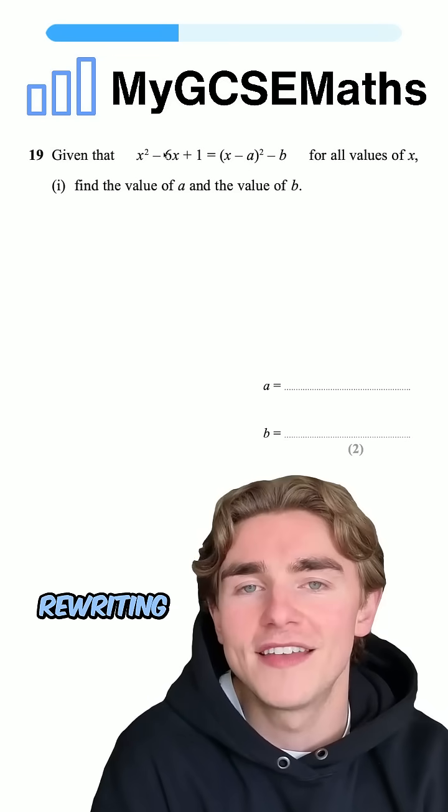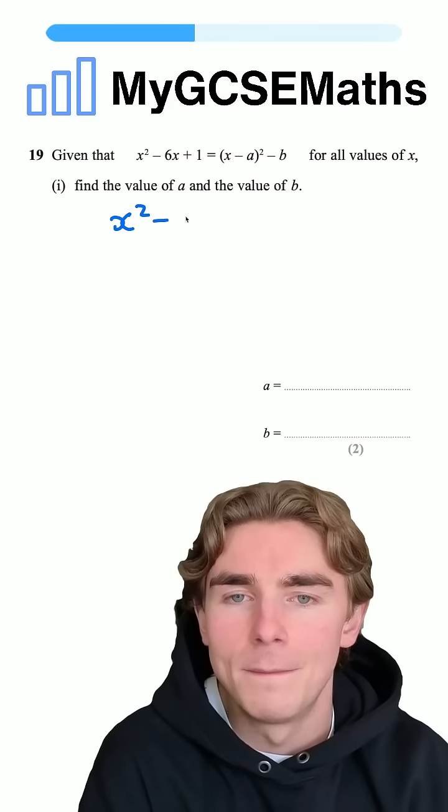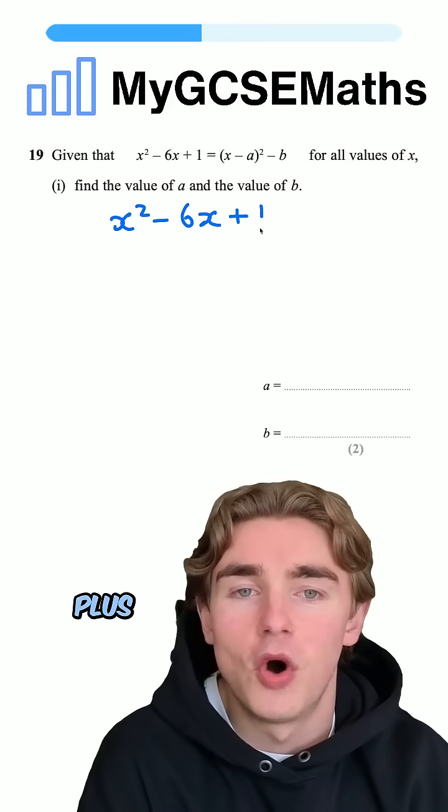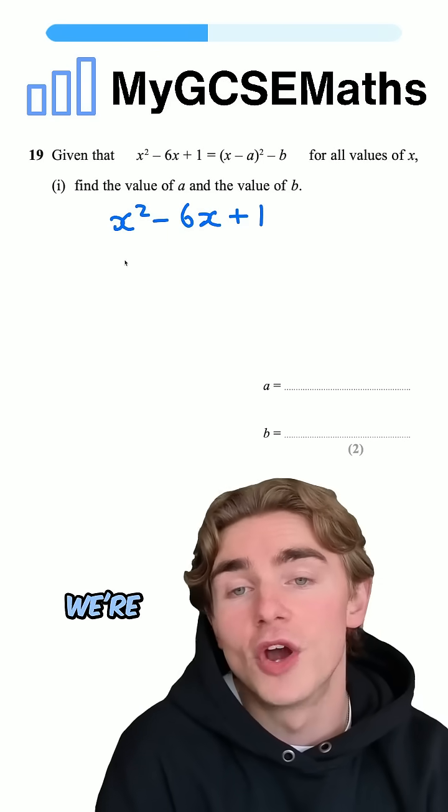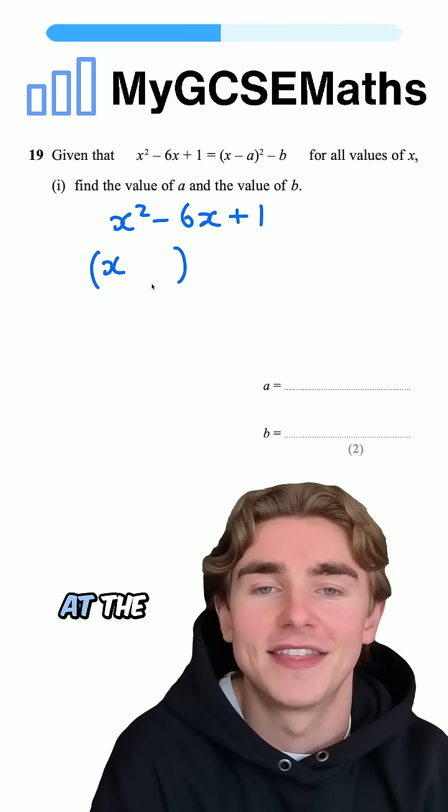I'm going to start off by rewriting the left-hand side of the equation. So, we're going to have x squared minus 6x plus 1. Step number 1, we're going to write out a pair of brackets, and we're going to write an x at the front.